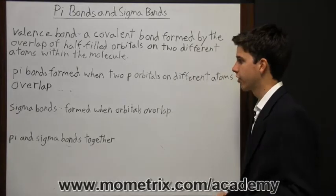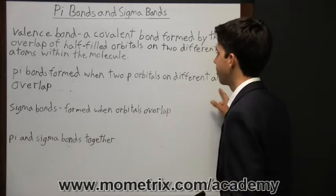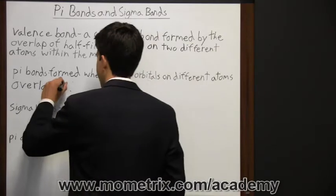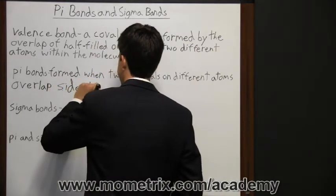So pi bonds, in particular, are formed when two p orbitals on different atoms overlap side by side.